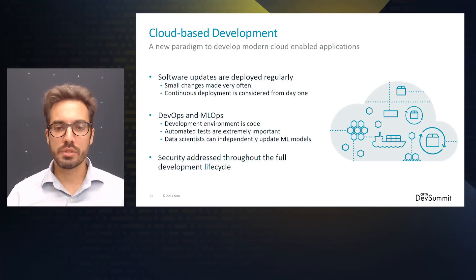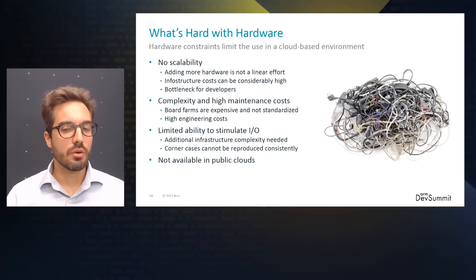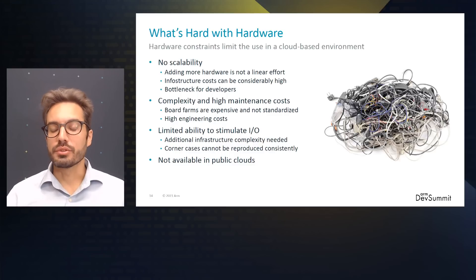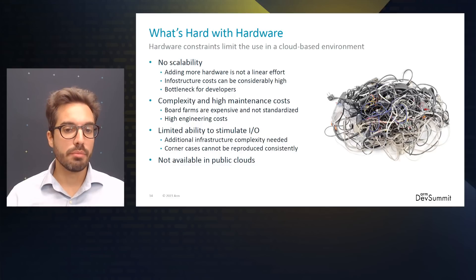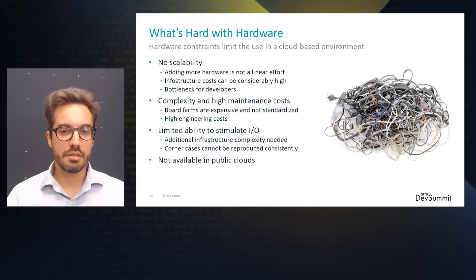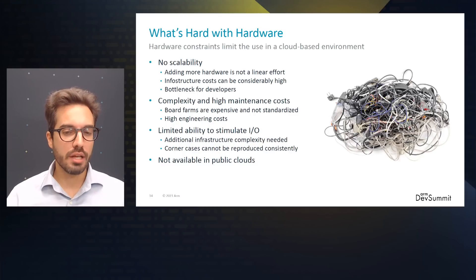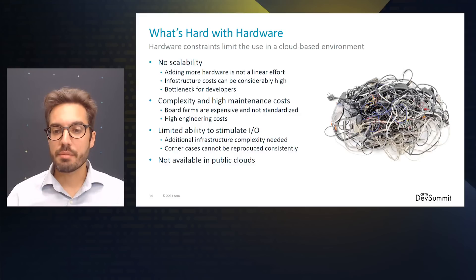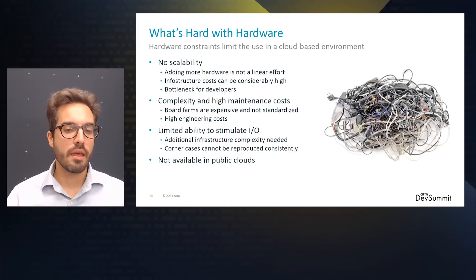Cloud-based development seems to solve our problems — but what's the catch? Unlike cloud applications, we can't simply run IoT applications across virtual machines or containers; we are bound to real hardware. Hardware is difficult to scale — although IoT boards and chips are relatively cheap, building and managing board farms is very expensive and requires expertise often only available in large teams. Compute and testing resources are always a bottleneck. Moreover, procurement can be challenging, especially during chip shortages, or even impossible when a chip hasn't been taped out yet. There's also limited ability to reproduce corner cases such as sensor boundary conditions or intermittent internet connections. Finally, IoT boards are simply not available in public clouds, making native firmware execution in the cloud infeasible.